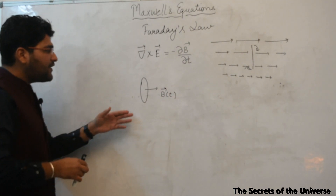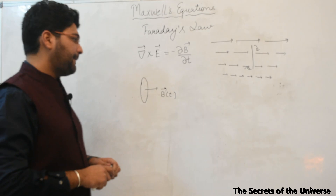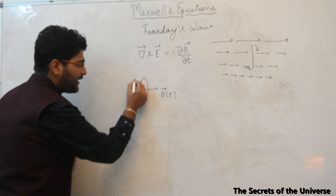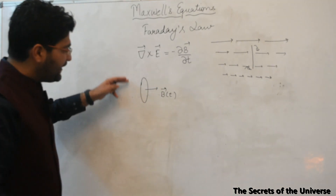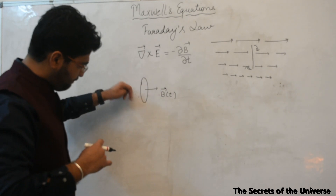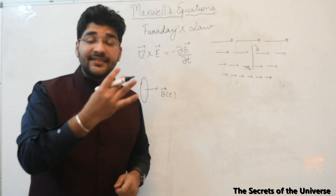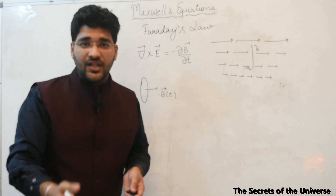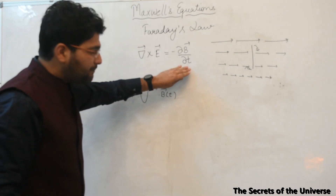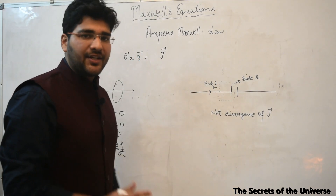Curl at a particular point in a vector field represents how much turning effect it would produce at that point. In terms of Faraday's law, if you have a round metallic ring and pass a time-varying magnetic field through it, this changing magnetic field will induce an electric field around the ring, causing electrons to flow and producing a current. The negative sign signifies that the induced current opposes the change in the magnetic field.